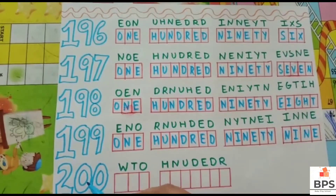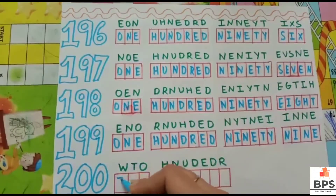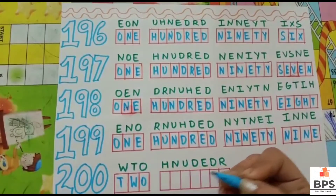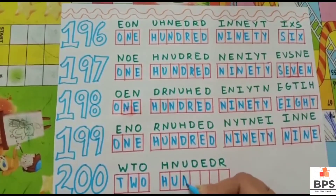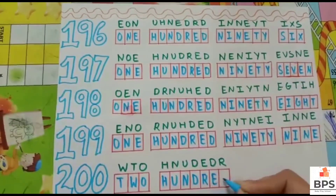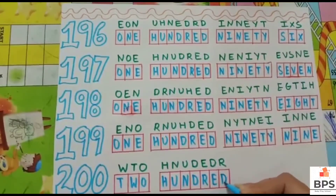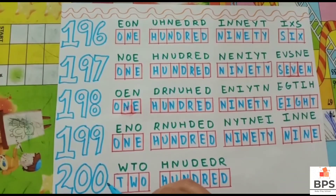200. T-W-O, 2, H-U-N-D-R-E-D, 100. Two hundred — 200.